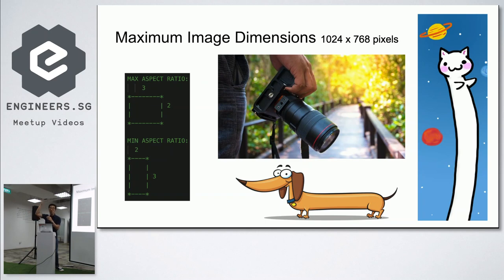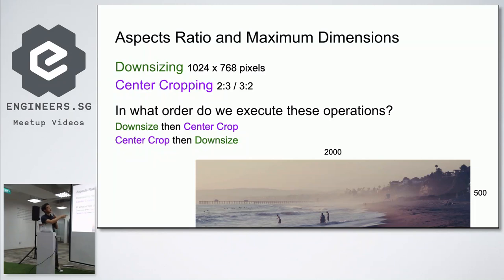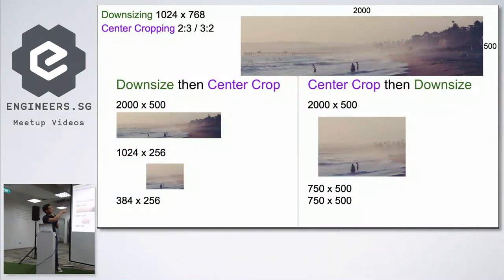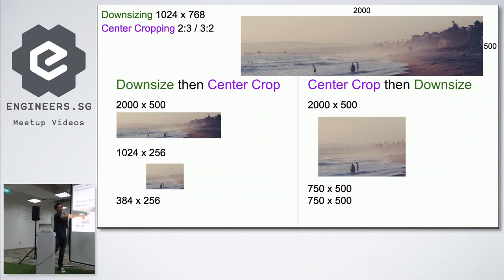We just need to crop the top, bottom, or left and right. Let's do an example. Say the image is 2000 by 500. We need to downsize it to 1024 and center crop it. Does the order matter — downsize first or center crop first? The answer is yes, it matters. If you downsize first, you get 1024 by 256, then center crop gives 384 by 256. But if you center crop first, 750 by 500 is already within limits — no downsizing needed. So you should always center crop then downsize. Thankfully another engineer caught this and we fixed it — good for code review.